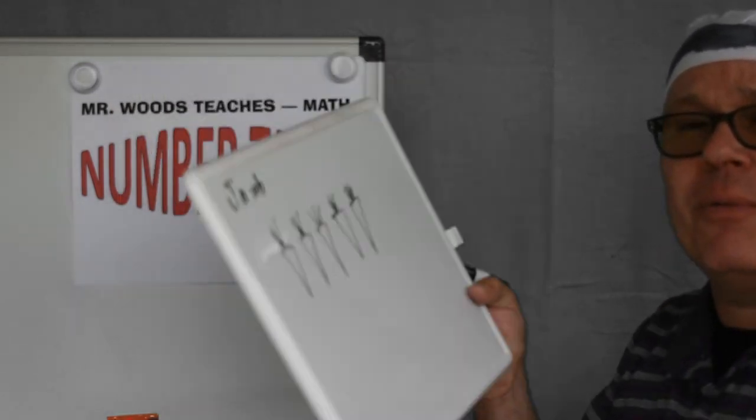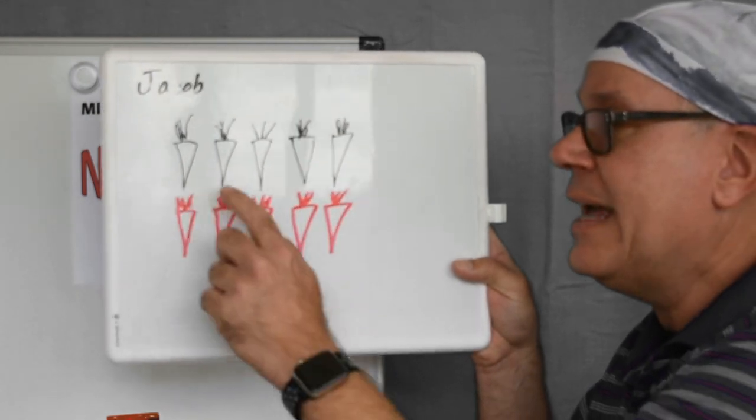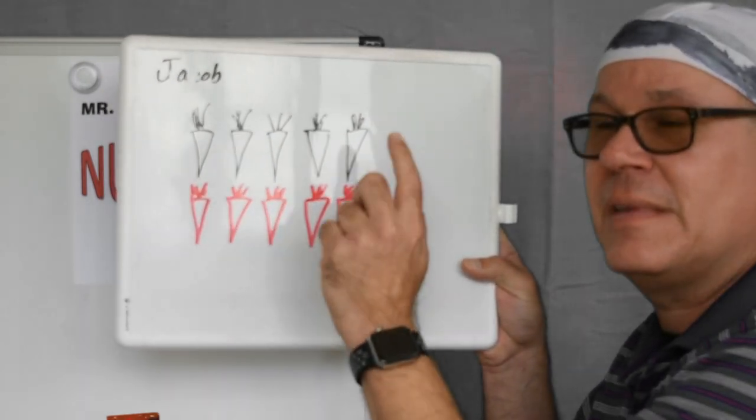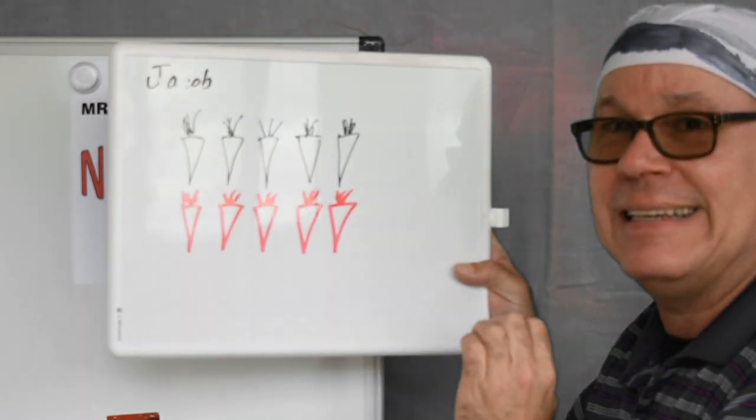Let's see what we can do to count on. We know that Jacob added five. And we know that he had ten plants at the end.